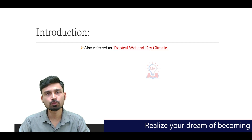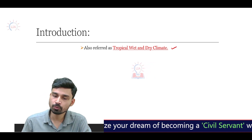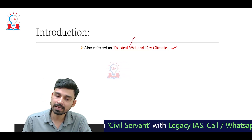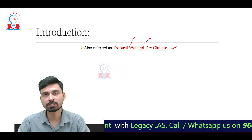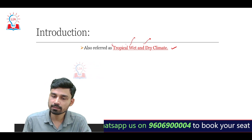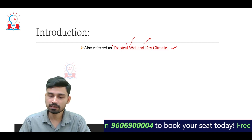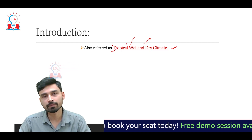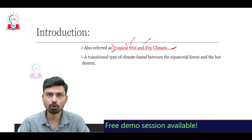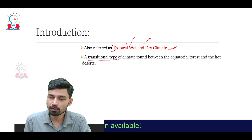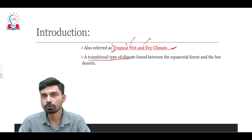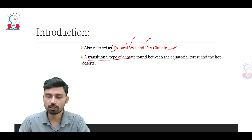Apart from these two common names, the climate is also geographically referred to as tropical wet and dry climate. The reason is simple: this climate is characterized by a distinct wet season followed by a dry season. Since this zone of climate lies in the tropical areas, it is called tropical wet and dry climate. It is also an example of a transitional type of climate, also called marginal climate, acting as a boundary between two distinct ecological zones.